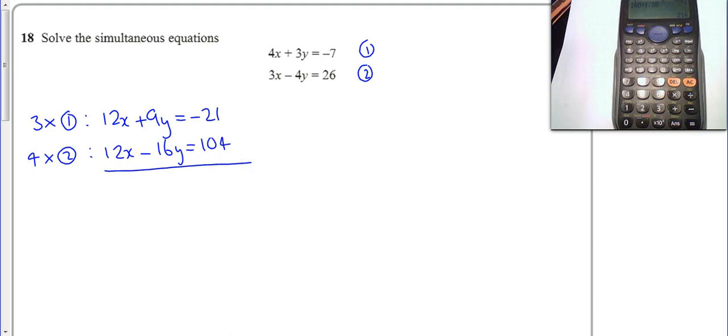Now I'm going to subtract. I'm going to subtract these things. I can subtract up or down, it doesn't make a difference. I'm going to choose to subtract down. So 12 take away 12 is 0. 9 subtract minus 16 gives me 25y. Be careful about that. And minus 21 take away 104 gives me minus 125. So I can tell straight away from that that y equals minus 5.